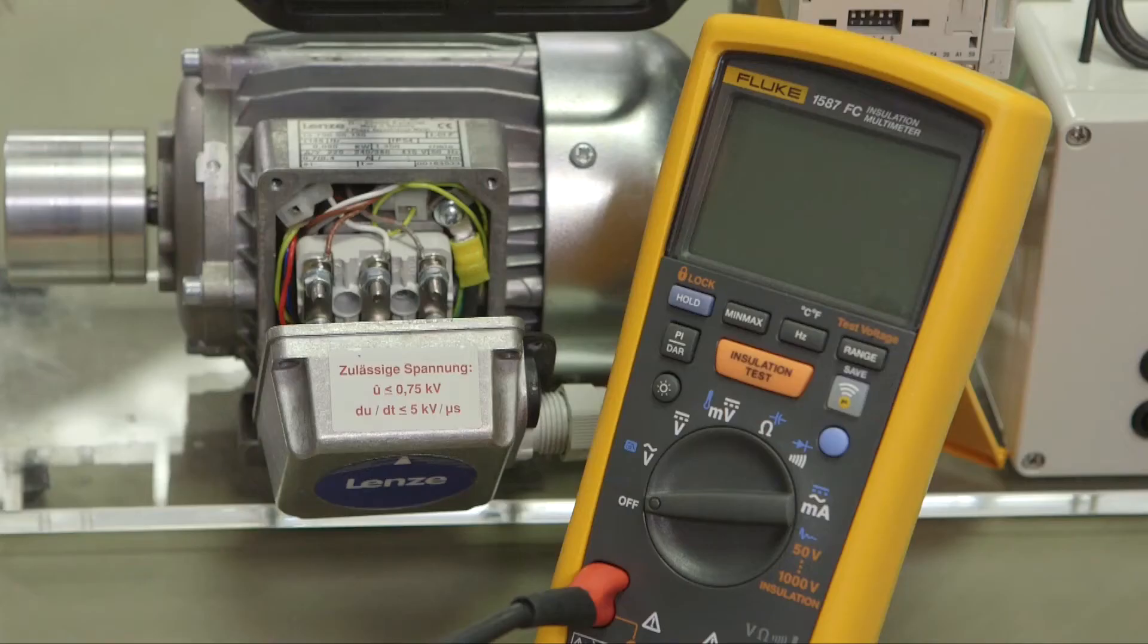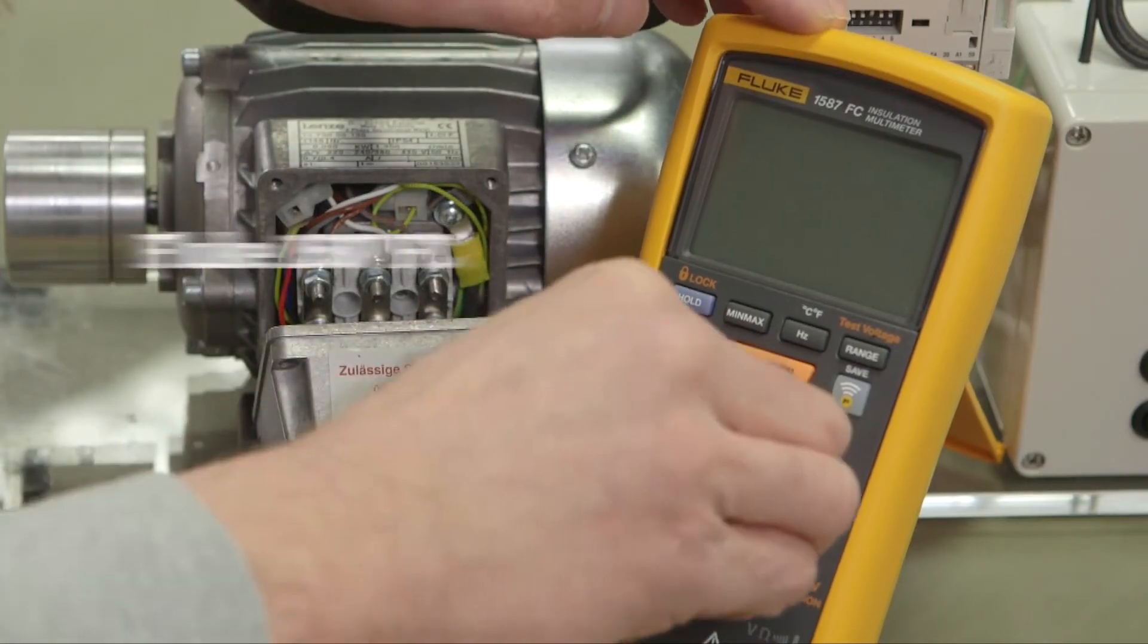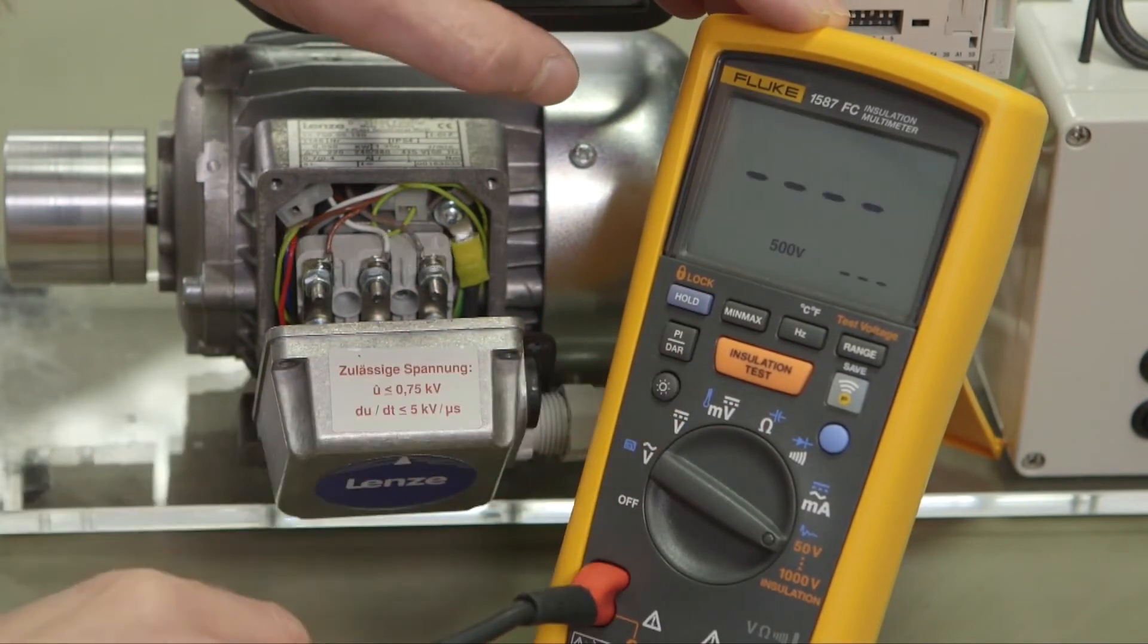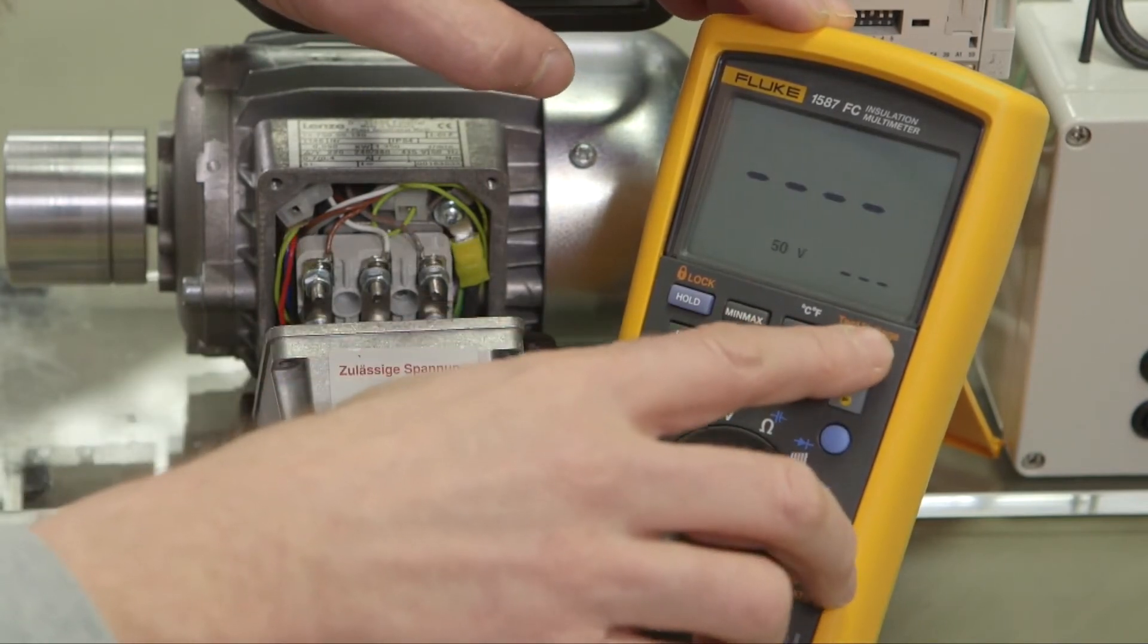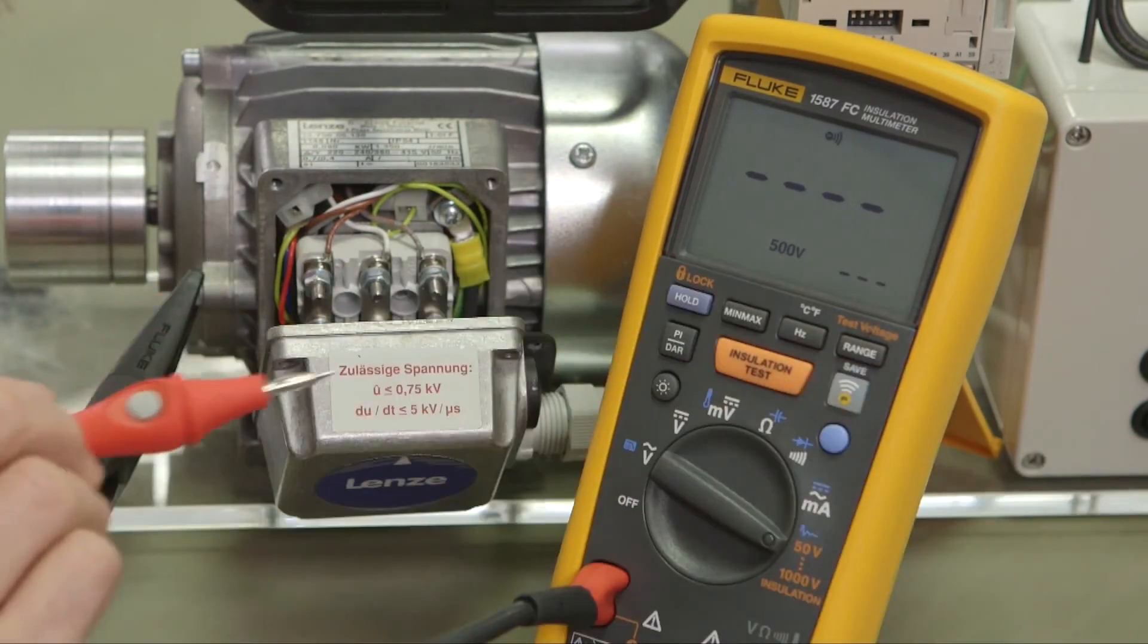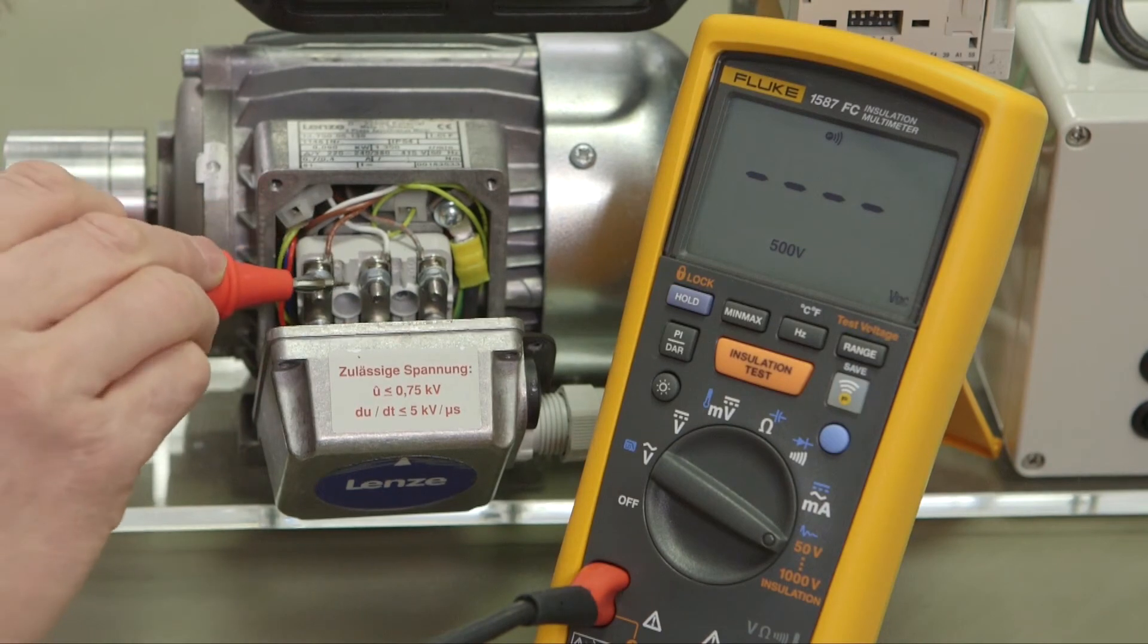The 1577 or 1587 FC enables you to measure insulation resistance and check the quality of the insulation. The 1587 FC has 5 levels of test voltages and includes Fluke Connect for reading measurements remotely.